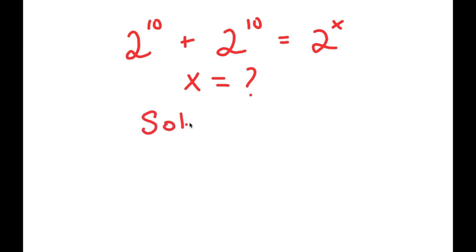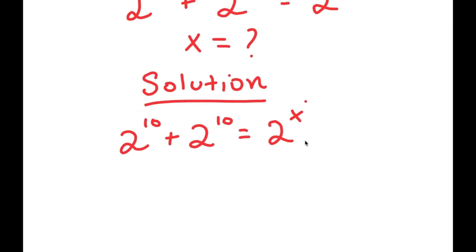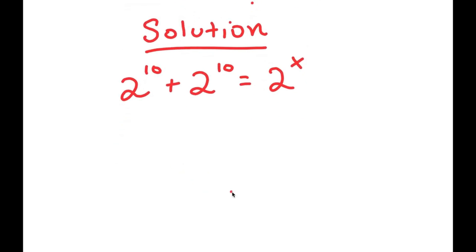For my solution, I'm going to first start by rewriting my equation. So my equation is 2 to the power of 10 plus 2 to the power of 10 is equal to 2 to the power of x. Now, to solve this, what I'm going to do is first factor out 2 to the power of 10 from my left-hand side.